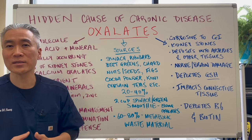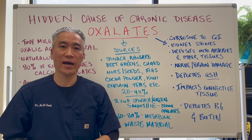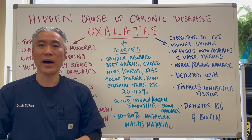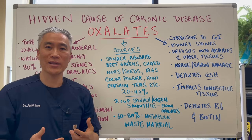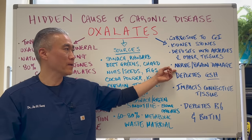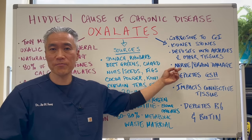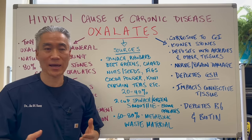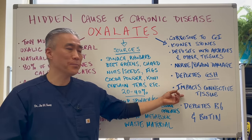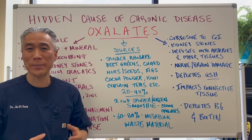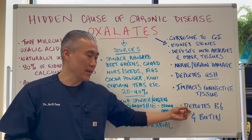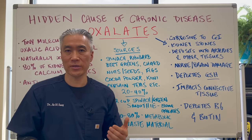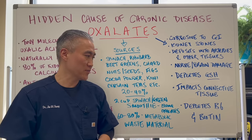Why are oxalates bad? It's corrosive to the GI tract. It can cause kidney stones and it deposits into your arteries as well as other tissues in our body. It can impact the nervous system and the brain. It depletes your glutathione stores, which are antioxidants, and impacts connective tissue. So you can experience joint pain and recovery might not be good after aggressive exercise — you can still experience joint discomfort or soreness because of it.